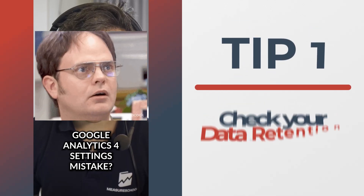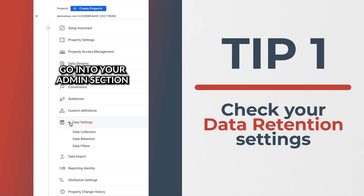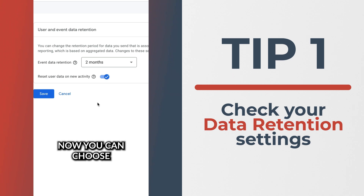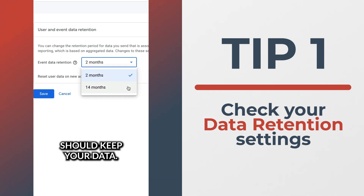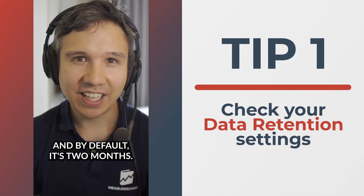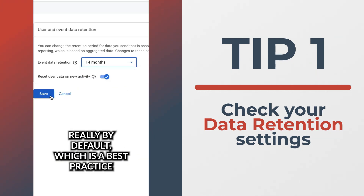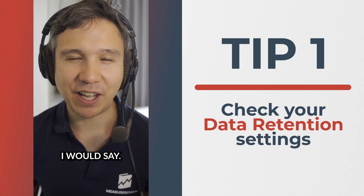Are you making this Google Analytics 4 settings mistake? Go into your admin section, look under the properties, under data settings, and there's a data retention setting. You can choose the period for how long Google should keep your data, and by default it's two months. It should be set to 14 months for every account — that's really a best practice.